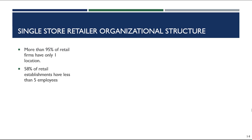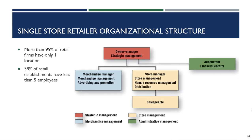So how do retailers accomplish all of these tasks? It seems like you'd need a large team, but that's not always the case. More than 95% of retail firms have only one location, and 58% of retail establishments have fewer than five employees. In a small retail firm, the owner handles strategic management decisions, an accountant handles finances, a store manager and salesperson handle operations, and one merchandise manager handles everything from buying to advertising.